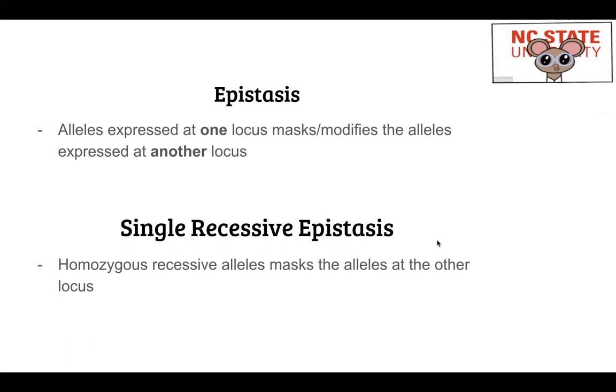There are about six modes of epistasis, but we are going to only focus on single recessive epistasis since that's what's happening in your case. This is when a homozygous recessive allele masks the alleles at another locus, whether it be dominant, recessive, or both.